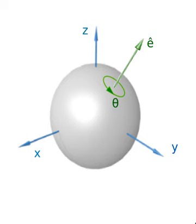The rotation group is a Lie group of rotations about a fixed point. This common fixed point is called the center of rotation and is usually identified with the origin. The rotation group is a point stabilizer in a broader group of orientation-preserving motions. For a particular rotation, the axis of rotation is a line of its fixed points.